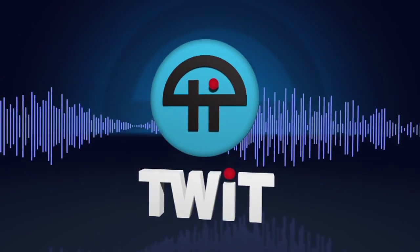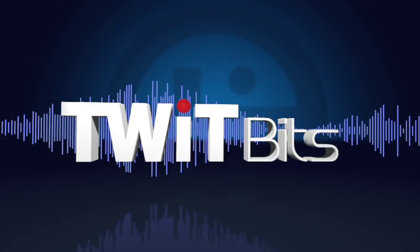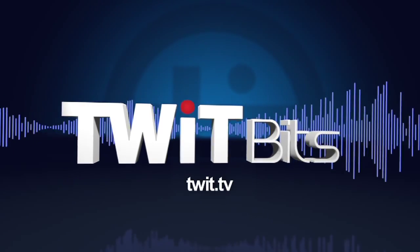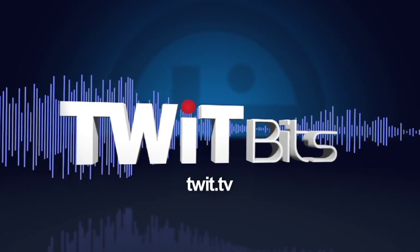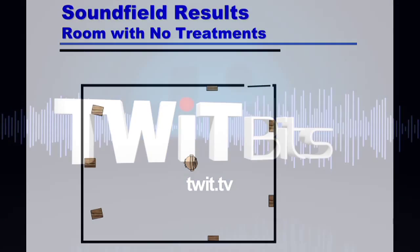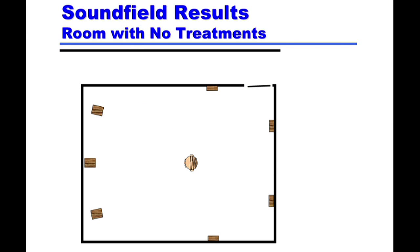This is TWIT. Let's get back to the most important channel, which is the center channel. When the sound comes from it, there's a direct sound from the speaker to you. If you click, you'll see that — that's the green arrow in there.